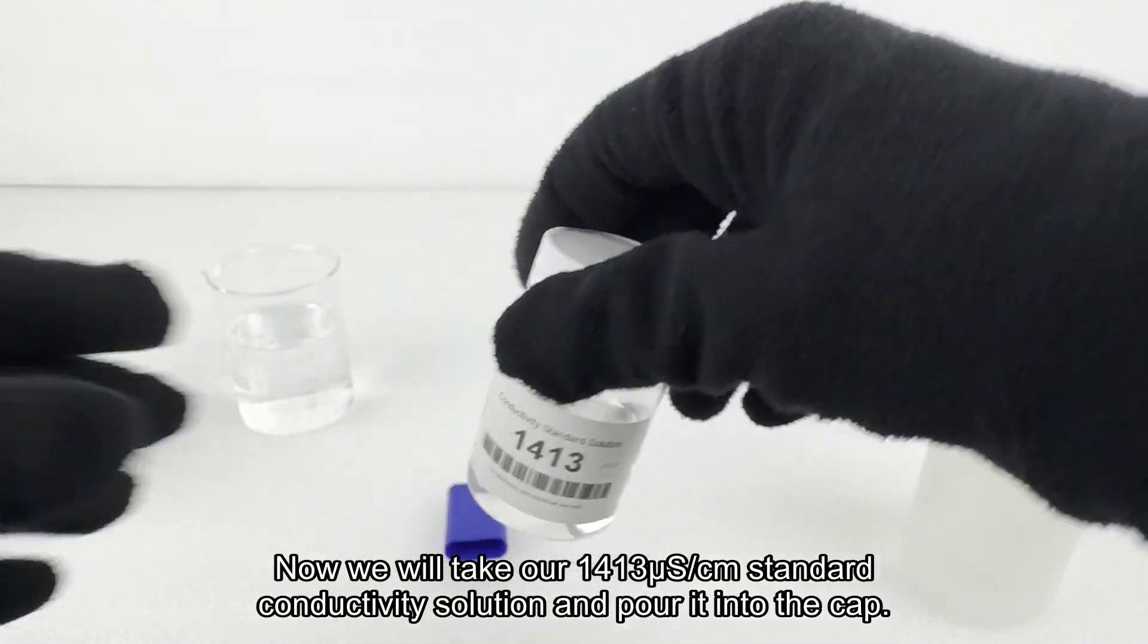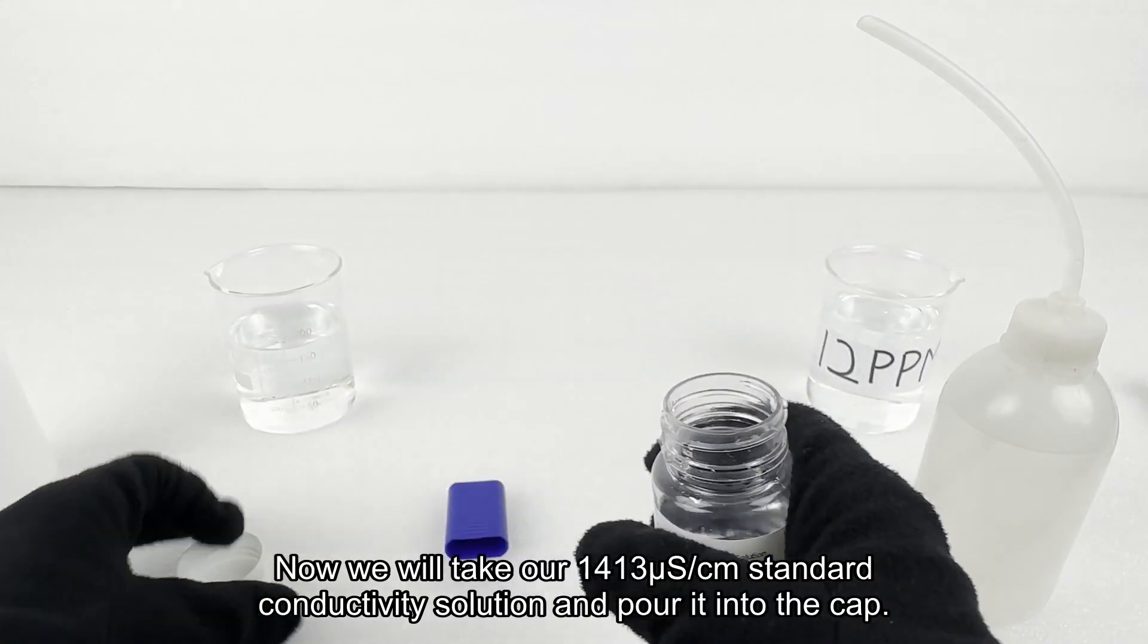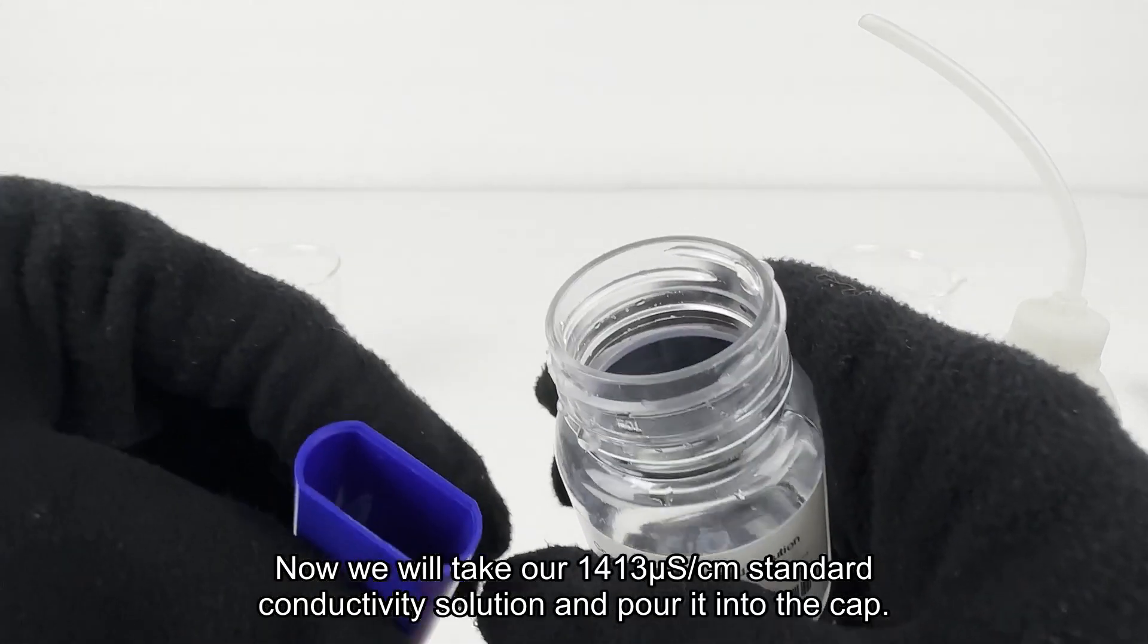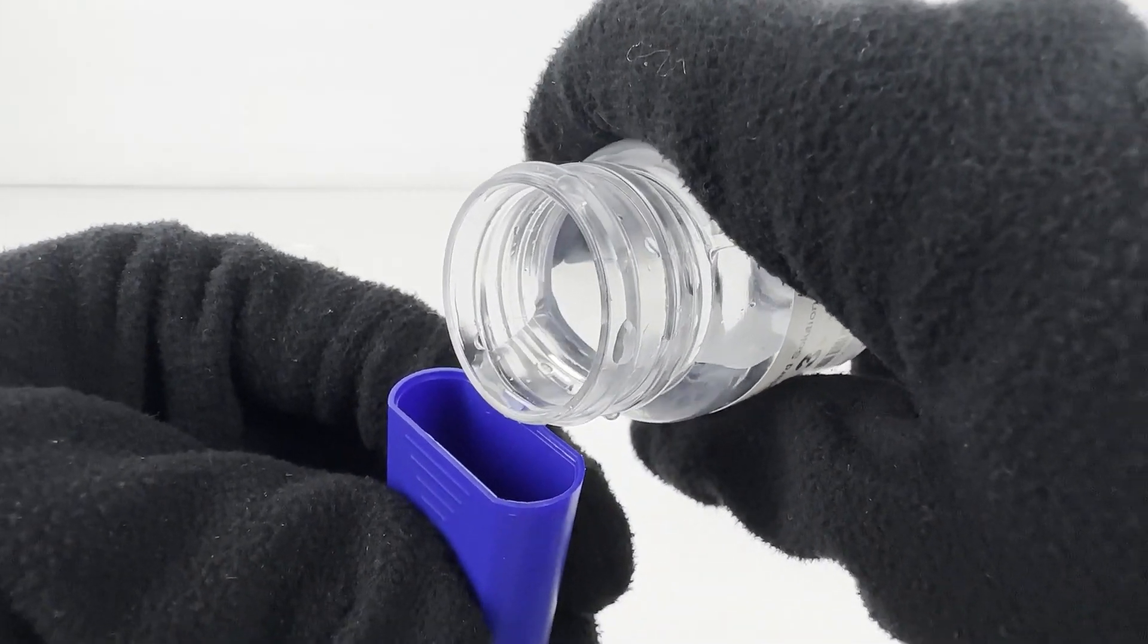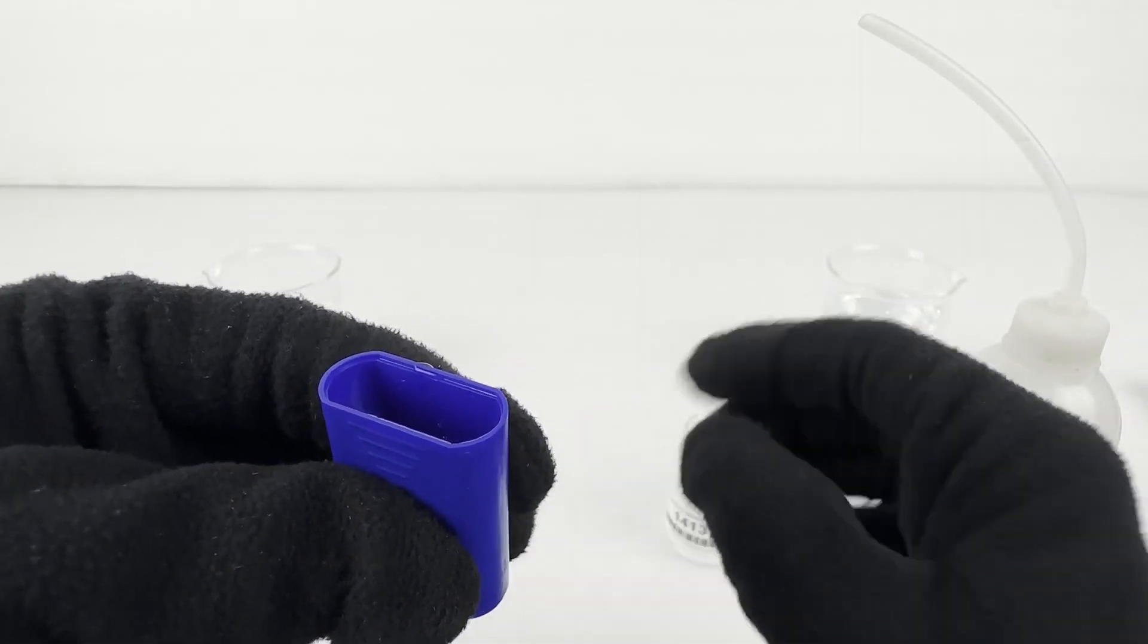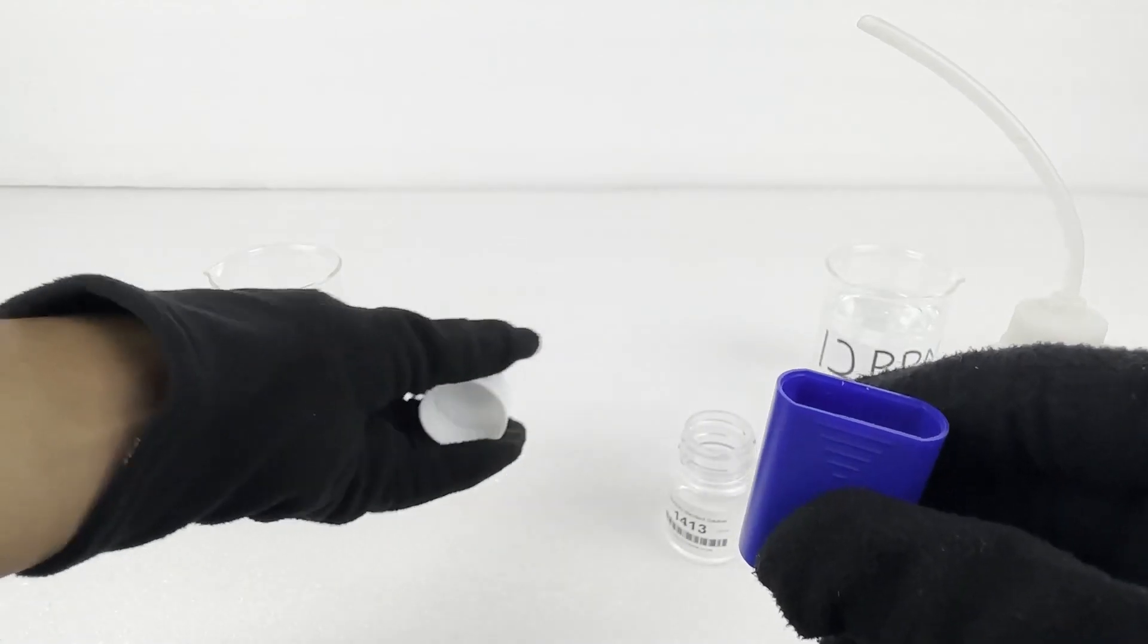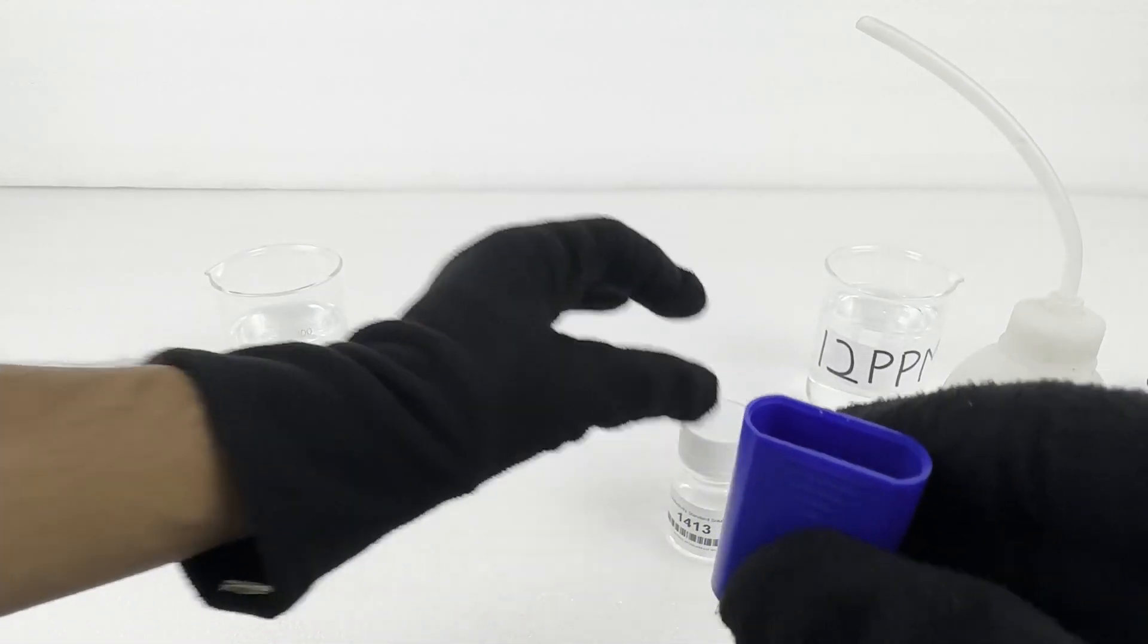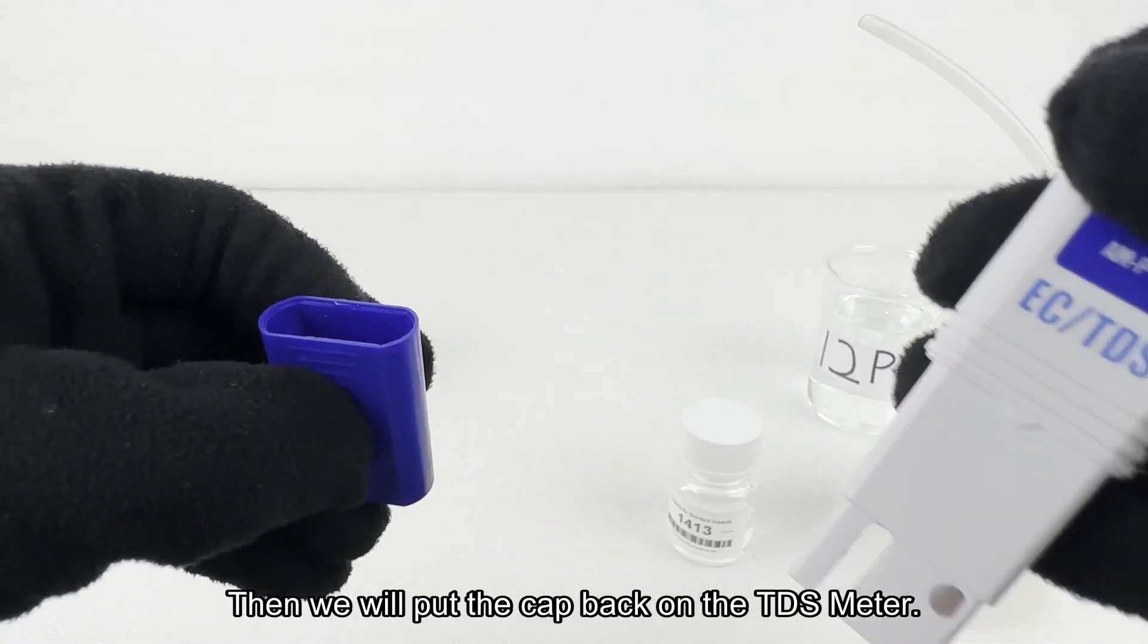Now we will take our 1413 micro Siemens standard conductivity solution and pour it into the cap. Then we will put the cap back on the TDS meter.